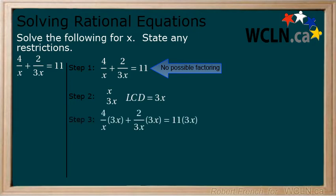Step 3. Multiply both sides of the equation by the lowest common denominator. Before we multiply the terms together in our numerators, cancel where possible. In the first expression, we can cancel the x, and in the second, we can cancel the 3x. Now multiply where possible.